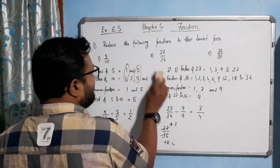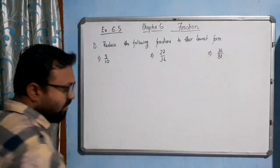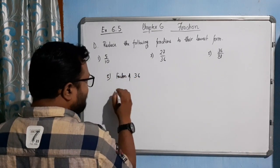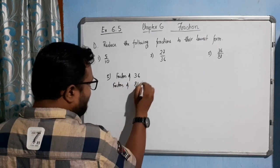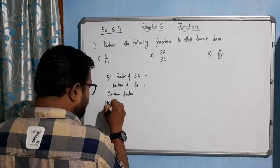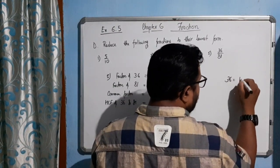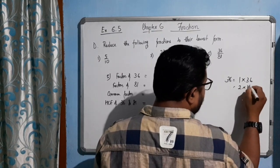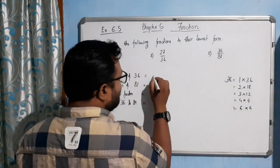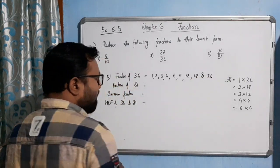Now come to the fifth one. For question 5, we have 36 by 81. Let's find the factors of 36 and factors of 81 to get the HCF of 36 and 81. Factors of 36 are: 1 into 36, 2 into 18, 3 into 12, 4 into 9, 6 into 6. So the factors are 1, 2, 3, 4, 6, 9, 12, 18, and 36.